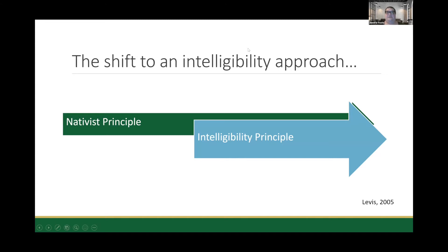The article by John Levis, 'Changing Contexts and Shifting Paradigms in Pronunciation Teaching,' came out that year and had a big impact on me. It talked about the shift from the nativist principle to the intelligibility principle in pronunciation teaching. The nativist principle was the older idea — that the goal of instruction was to make speakers sound as much like first language speakers as possible, to try to get rid of a second language accent. But we know from research that it's largely impossible; the vast majority of people who learn a second language as an adult will not sound like a first language speaker, and having an accent does not necessarily make a person difficult to understand.